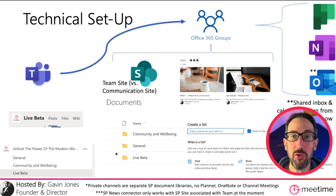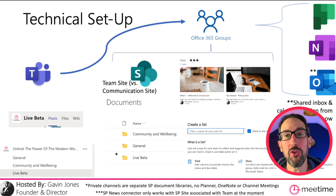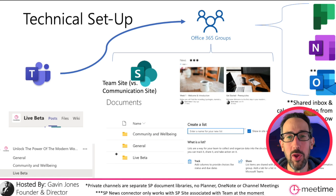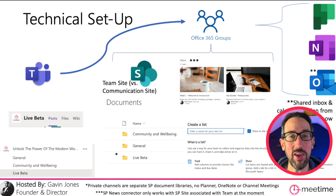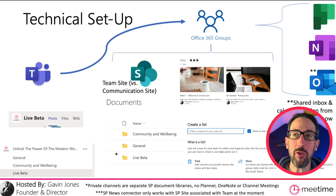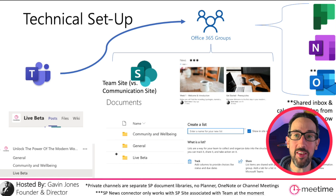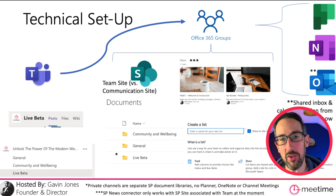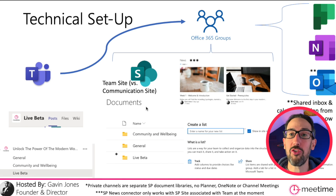It sets up a shared OneNote, which is now more important because it replaces Wiki. Whenever you used to create a new channel it would create a Wiki tab. Now a OneNote is created for the whole team, and every time you create a new channel, OneNote creates a new section for it. If you open OneNote in the desktop or web app, you'll see all the sections matching the channels — just like the document library folders match the channel names.